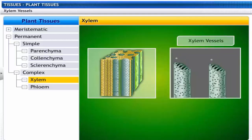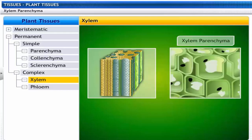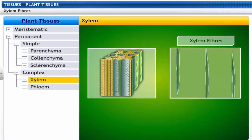Vessels are elongated dead cells that transport water and minerals. They are usually present in big trees. Xylem parenchyma cells are living and they store food. Xylem fibers are elongated dead cells with lignin that provide mechanical support.